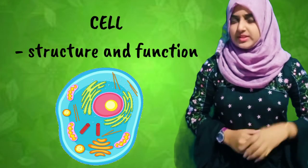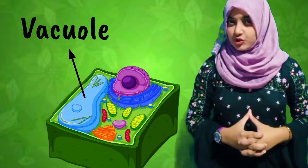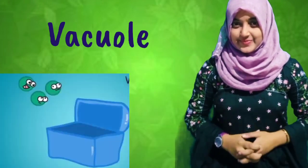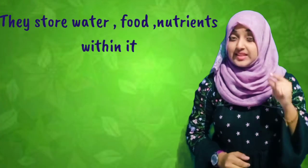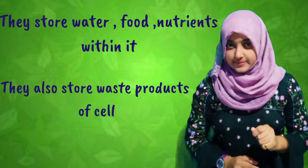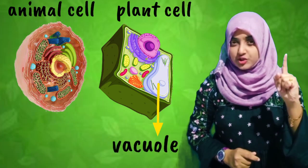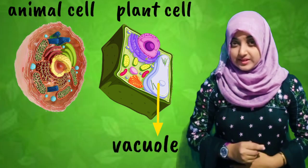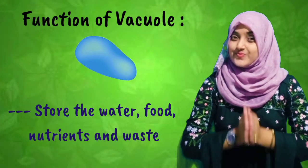Now let's deal with the other organelles of the cell — the vacuole and plastid. Vacuoles are the storage boxes of the cell; they store large amounts of water, food, and other nutrients, and also store waste products which they later send out of the cell. In a plant cell there is one large vacuole, whereas in an animal cell there are one or more small vacuoles. The major function of vacuoles is to store.